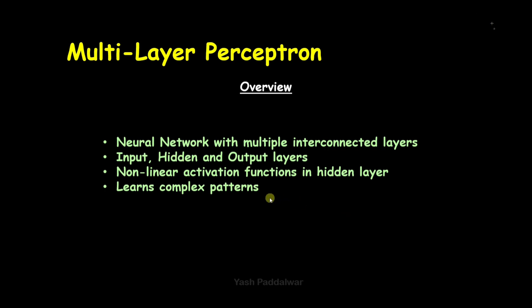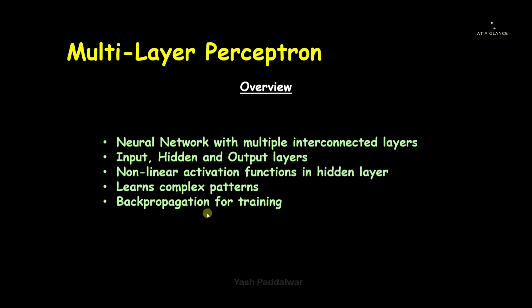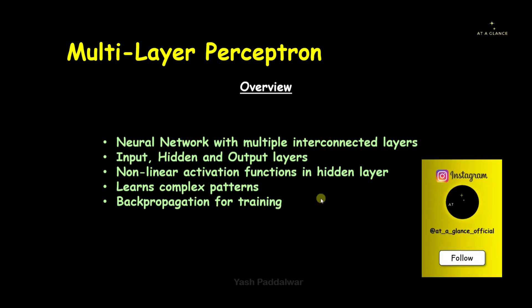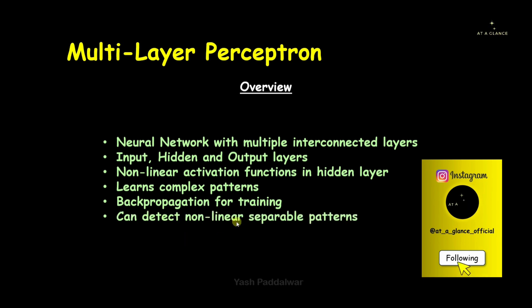The hidden layers in multi-layer perceptron are used to capture complex patterns from the datasets, which is why MLP is very much more important compared to the perceptron algorithm. One important point: MLP uses back propagation for training the data — an algorithm designed to pass back errors from output nodes to input nodes. We will look into this technique in the upcoming videos.